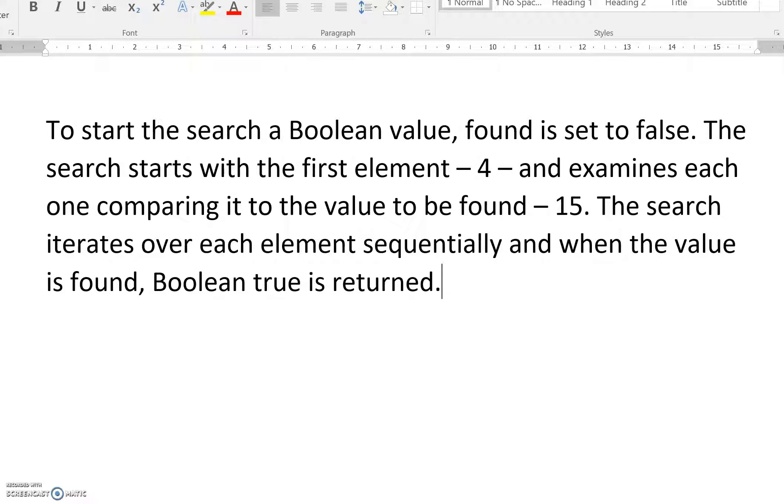Trying to read back my handwriting - I've got pretty appalling handwriting, so I've typed this up here so it's easier to read. To start the search, the boolean value found is set to false. The search starts with the first element, four, and examines each one comparing it to the value to be found, which is 15. The search iterates over each element sequentially, and when the value is found, boolean true is returned.